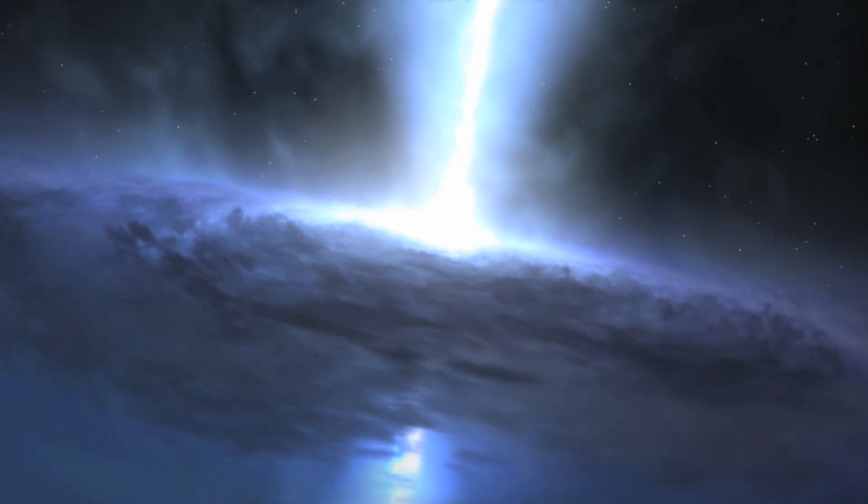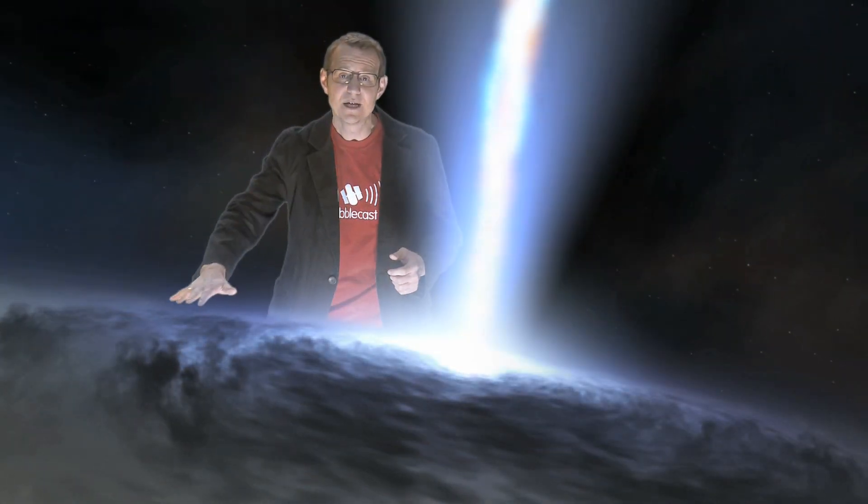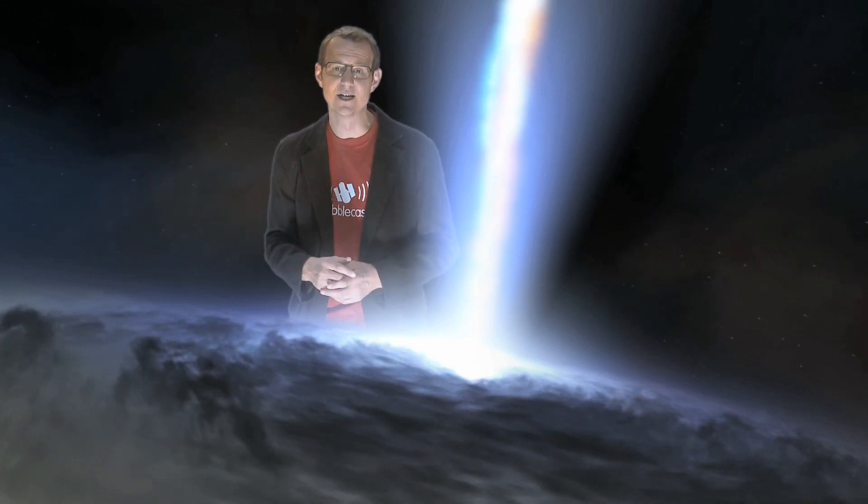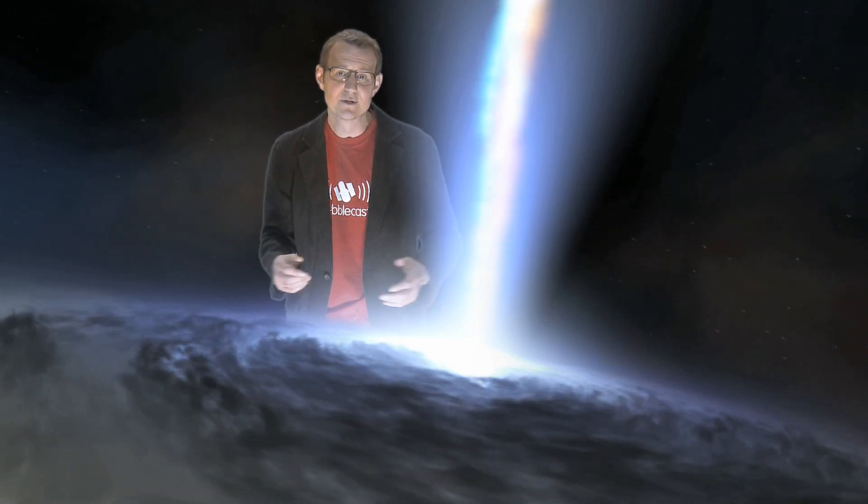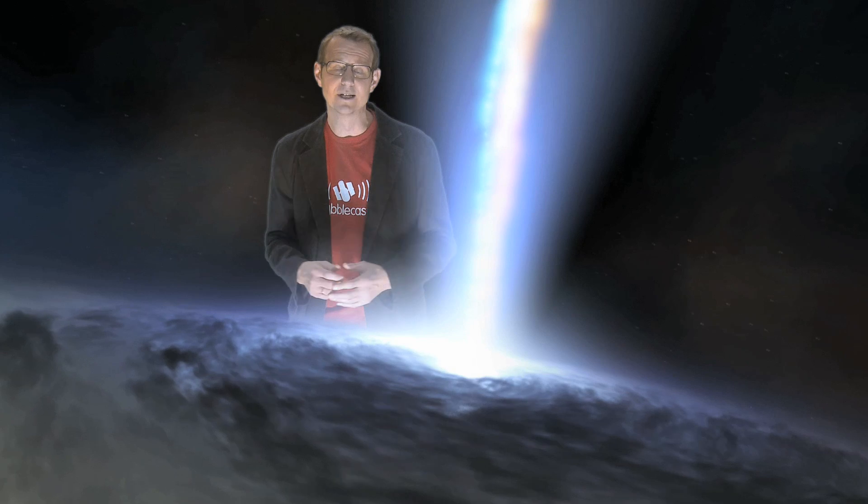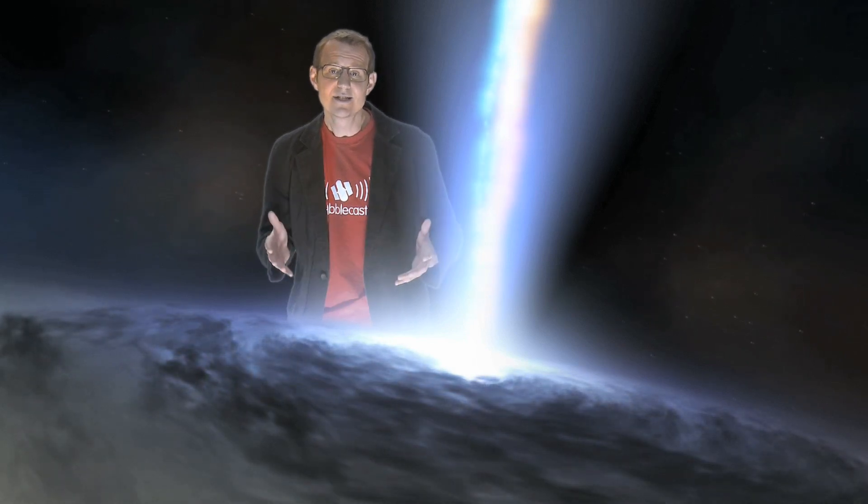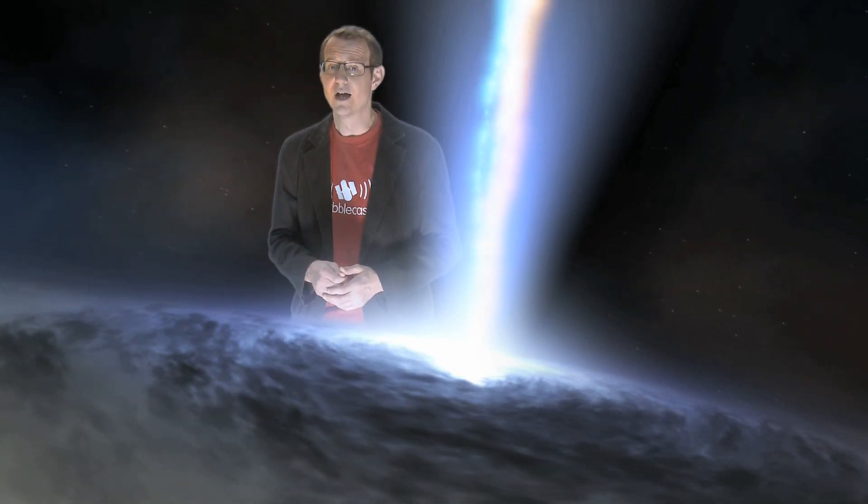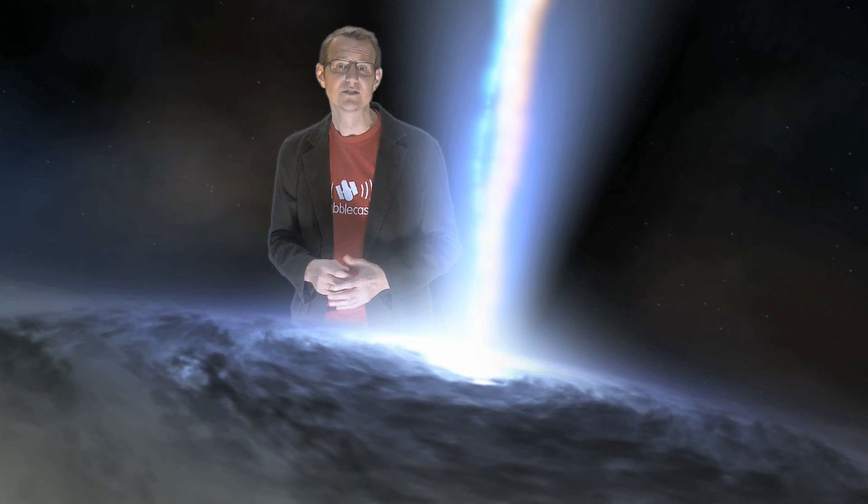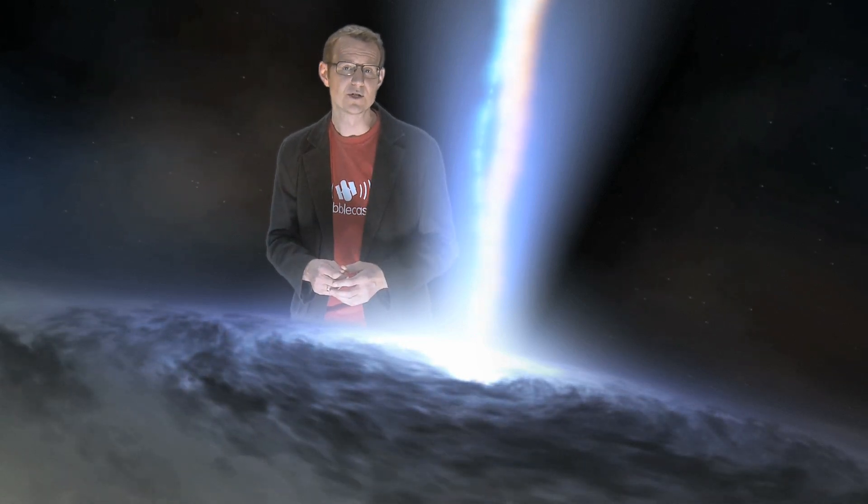Now when matter falls into a black hole, it forms this big swirling disk which heats up and gives off a lot of powerful radiation. The more matter falls into the black hole, the more powerful the radiation. Now these active, accreting black holes are called quasars, and they're amongst the most luminous and most powerful objects in the universe.